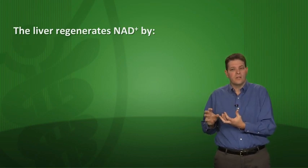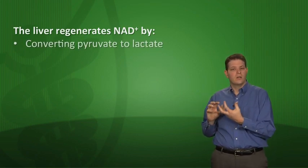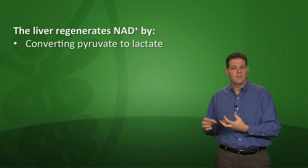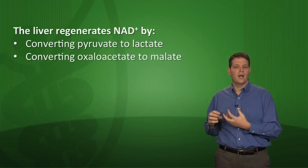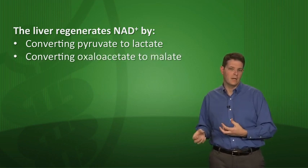While hepatocytes are busy metabolizing ethanol, they're making a lot of NADH. To keep metabolizing ethanol, they've got to convert that NADH back to NAD⁺, which they do by converting pyruvate to lactate and oxaloacetate to malate. If there's no pyruvate and no oxaloacetate available because it's all been converted to lactate and malate to regenerate NAD⁺, gluconeogenesis cannot take place.